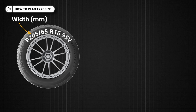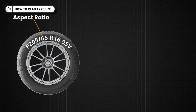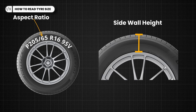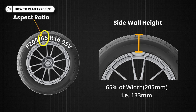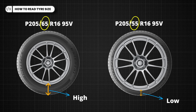The first number is the width of the tire in millimeters. Therefore, this radial tire has a width of 205 millimeters. The aspect ratio, represented by the second number, indicates the tire's sidewall height as a percentage of its width. In our example, 65 means the sidewall height is 65% of the tire's width. A higher aspect ratio typically indicates a taller sidewall, which can affect ride comfort and handling.